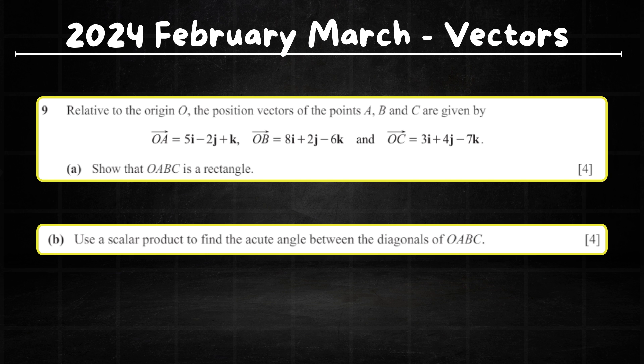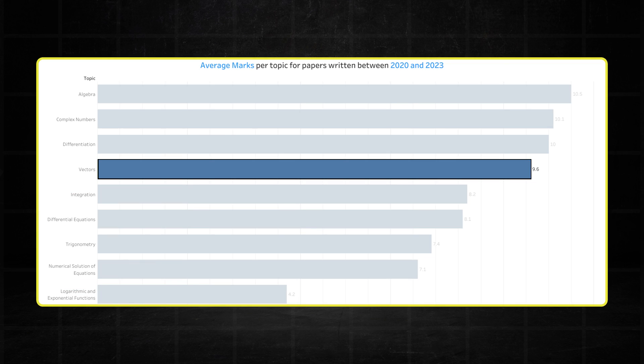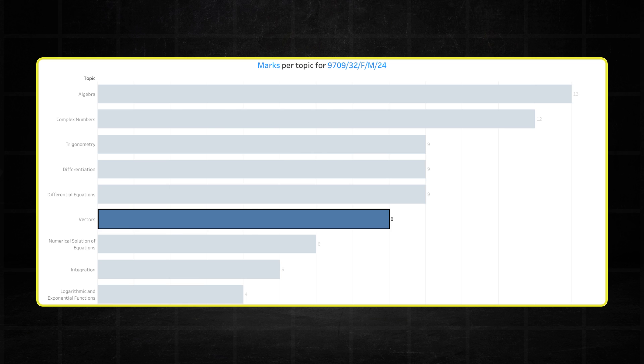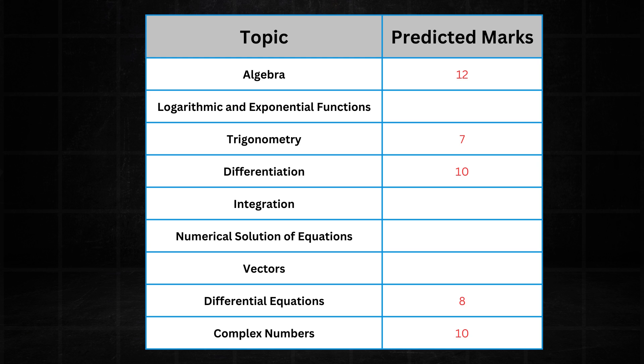The vectors question in the February-March paper was a bit of a giveaway, but slightly less challenging questions, hence the underperformance from its average of 9.6 marks down to 8 marks. I do expect more high order vector questions in the May-June series. So I predict it to average around 10 marks per paper.